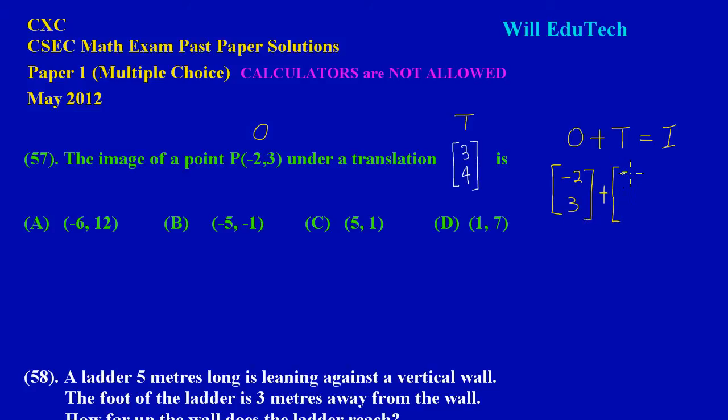We're adding to that the translation vector which is [3,4], and that should give us our respective image point. We have -2 + 3 that would give us positive 1, and 3 + 4 that would give us 7.